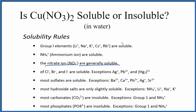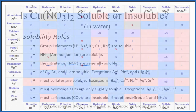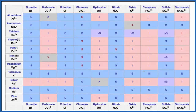We could also consult a solubility table, just to make sure. Here's our solubility table. We're going to find copper-2 right here — Cu²⁺ — and we're looking for the nitrate ion, which is over here.